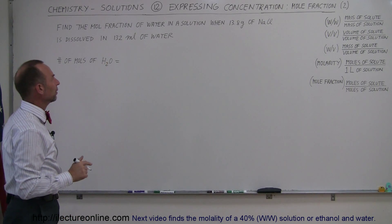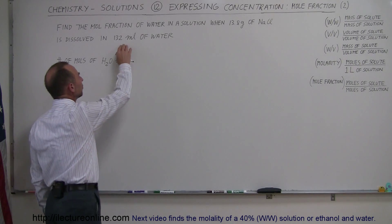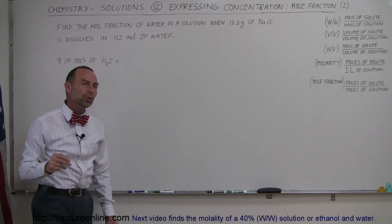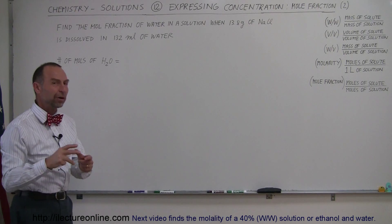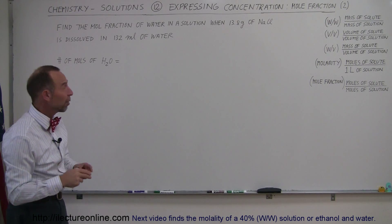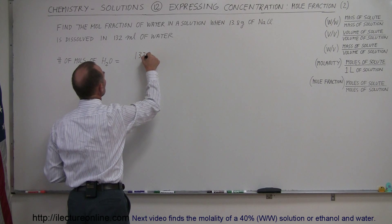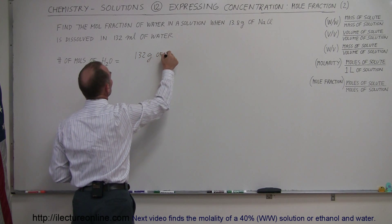Okay, we need the mass of the water. Now, they give us 132 milliliters and we can say that 132 milliliters of water is very close to 132 grams of water. So, let's take that as 132 grams of H2O.